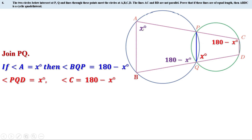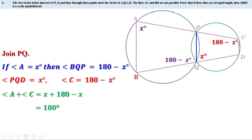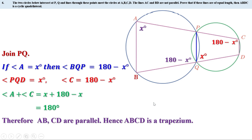Now look at angle A (x°) and angle C (180° − x°). Angle A plus angle C equals x° + (180° − x°) = 180°, so angles A and C are supplementary. These are the co-interior angles formed when lines AB and CD are intersected by line AC. If they are supplementary, then lines AB and CD are parallel.